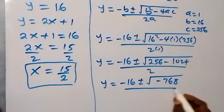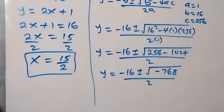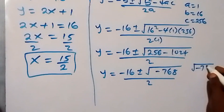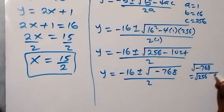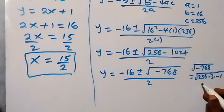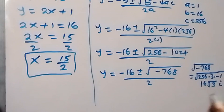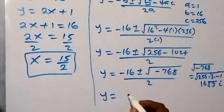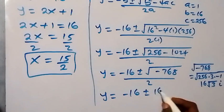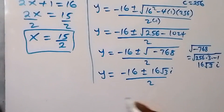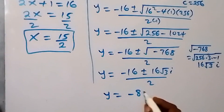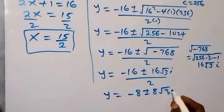From here, minus 768 under the square root — we can write that as square root of 256 times 3 times minus 1. Square root of 256 is 16, then we have root 3, and root of minus 1 is i. So this gives 16 root 3 i. We have y equals to minus 16 plus or minus 16 root 3 i, over 2. Dividing through by 2: y equals to minus 8 plus or minus 8 root 3 i.